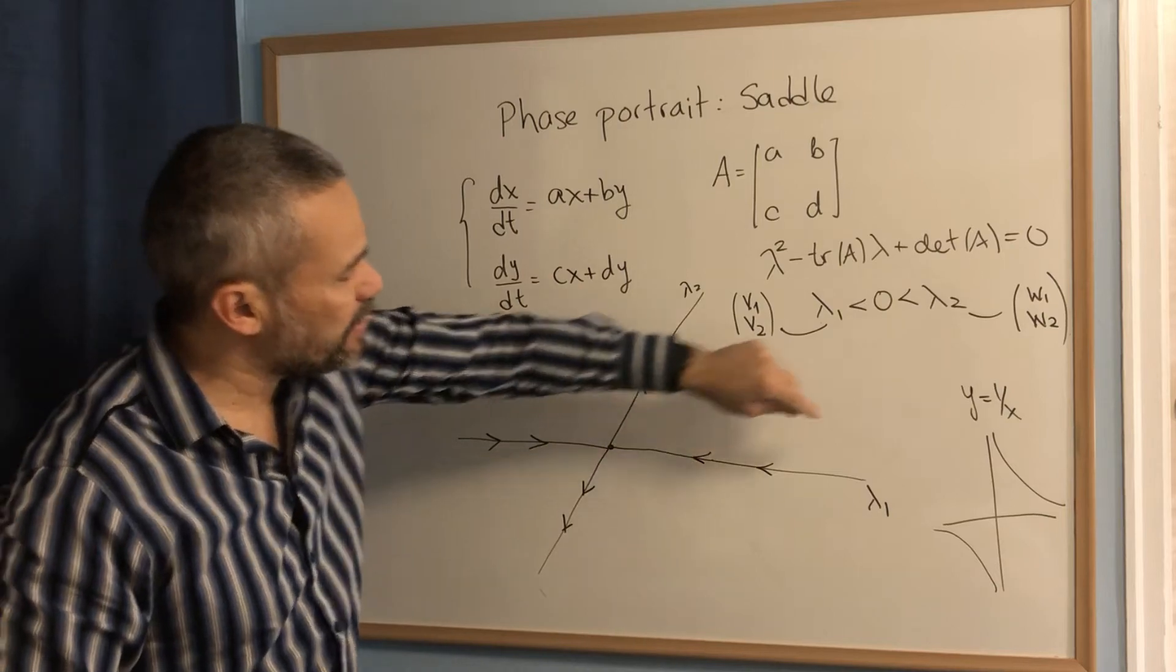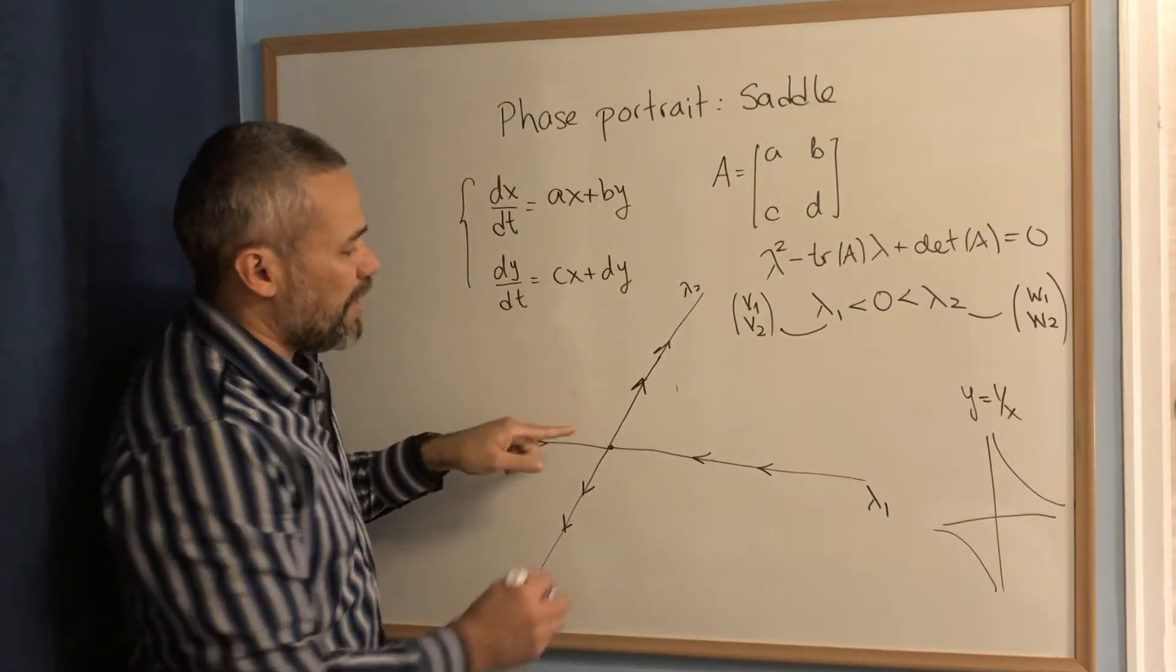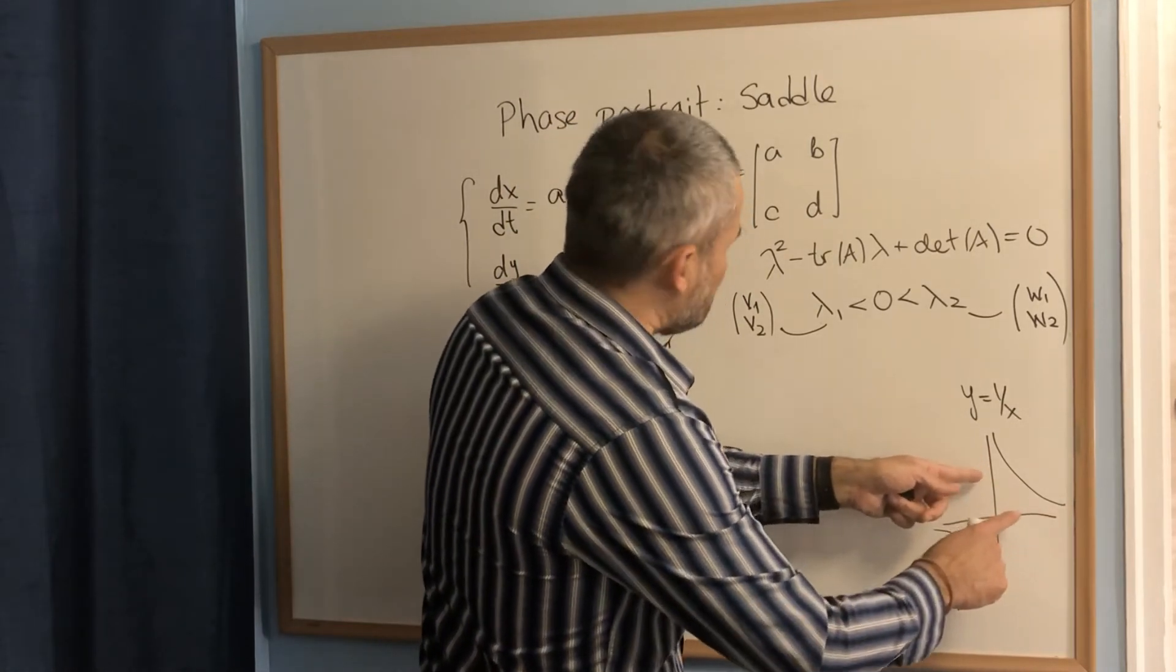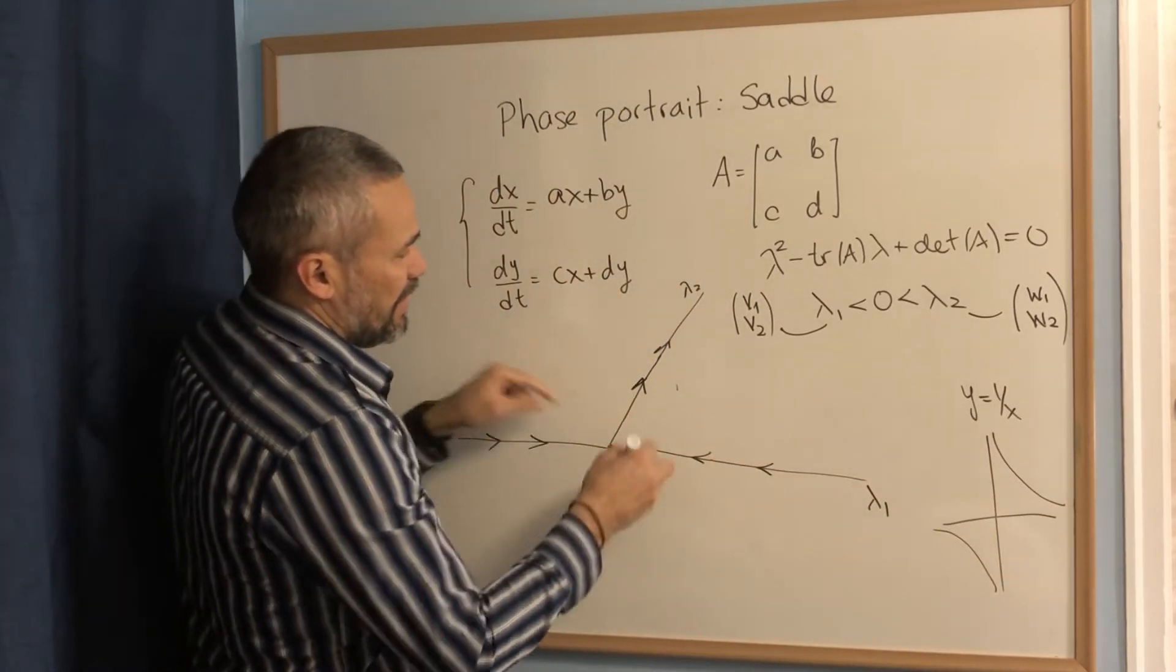And in each quadrant, we need to do something that looks like a hyperbola. But the asymptotes, instead of being the Cartesian axis, are going to be these orbits, these semilines.